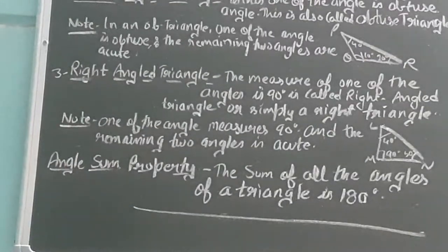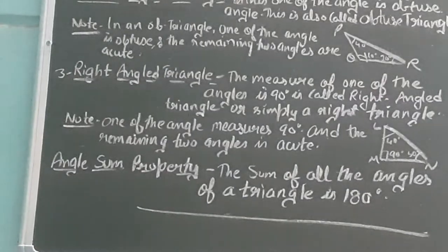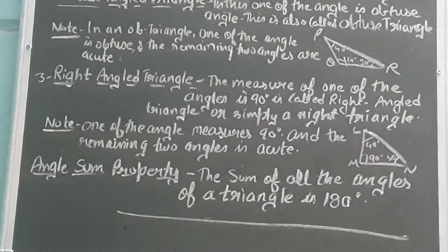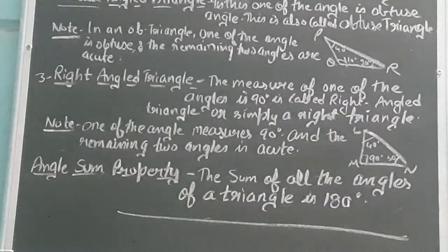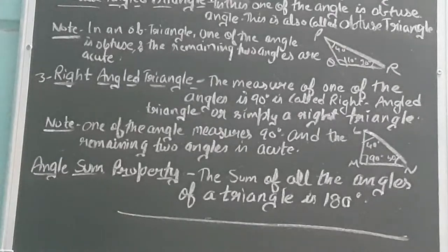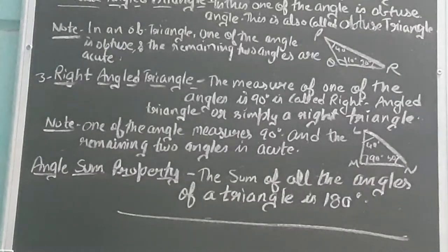The last type is the right angle triangle. In this type, the measure of one of the angles is exactly 90 degrees, and it is called a right angle triangle or right triangle. In triangle LMN, angle M is 90 degrees — the right angle — whereas angle L and angle N are acute angles, being 40 degrees and 30 degrees respectively.